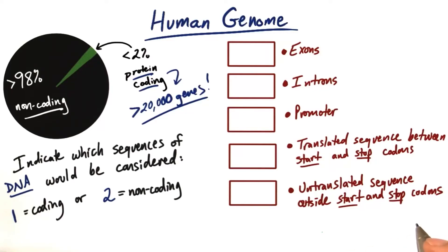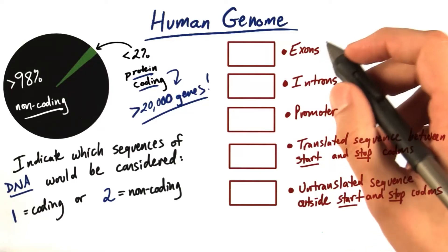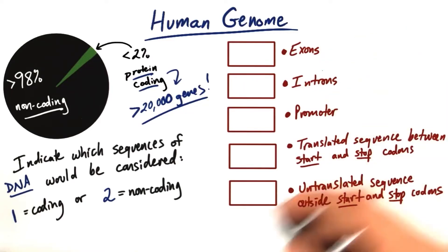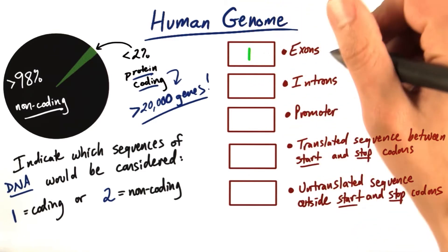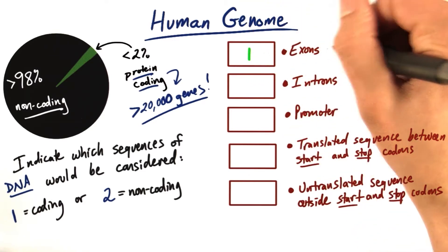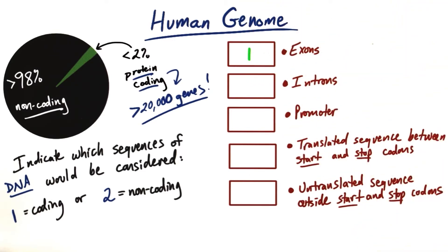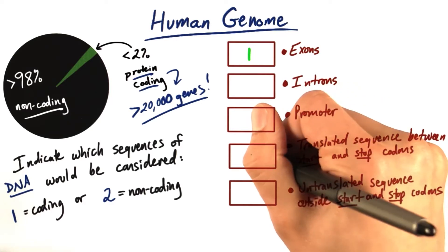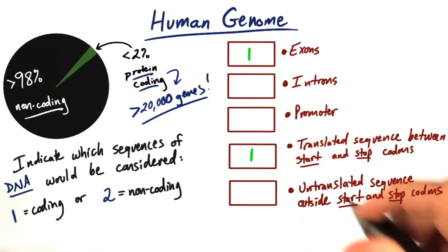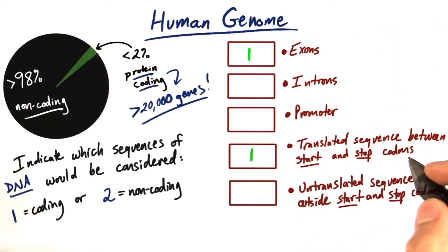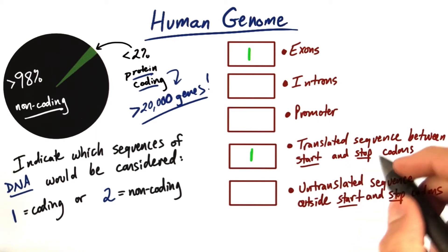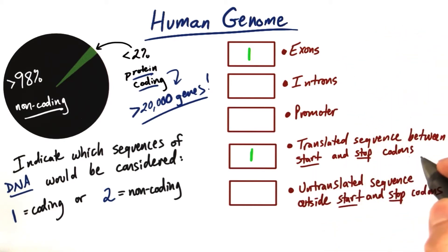The answer to this question is that exons are considered part of protein-coding DNA because exons are eventually turned into protein. The same is true for translated sequences between start and stop codons. They are all part of protein-coding DNA because the sequences that make up that DNA are eventually turned into protein.